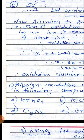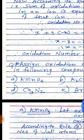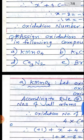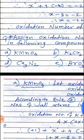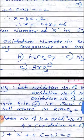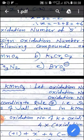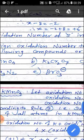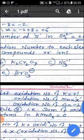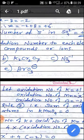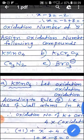In this way we can solve examples on calculation of the oxidation number of an unknown element. Next question: assign the oxidation number to each element in the following compounds or ions.